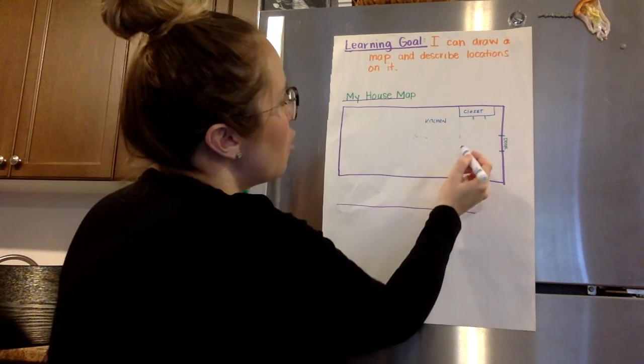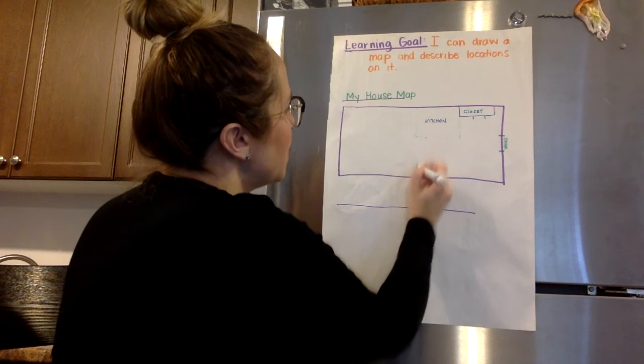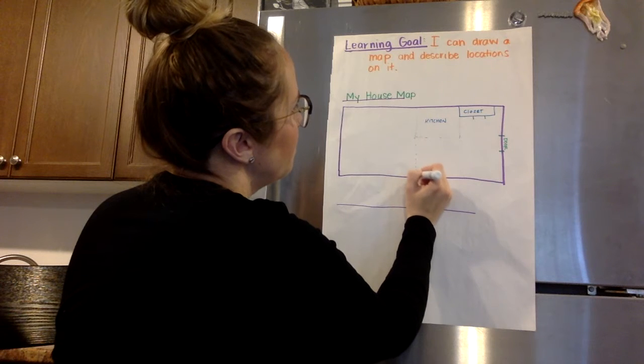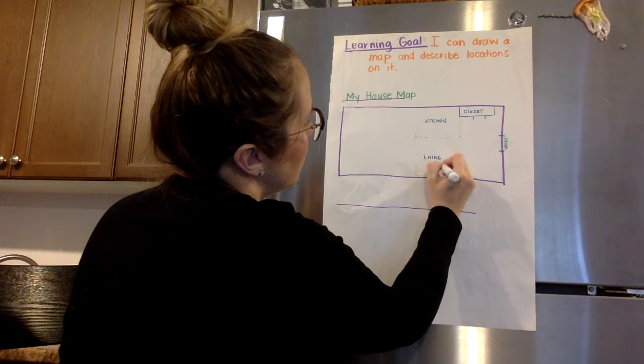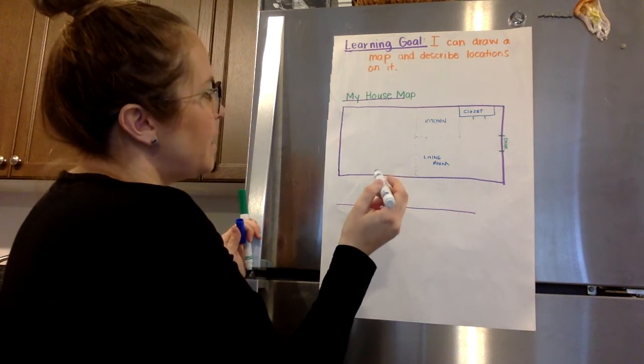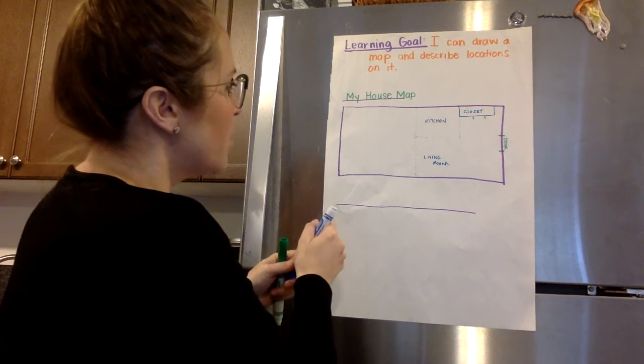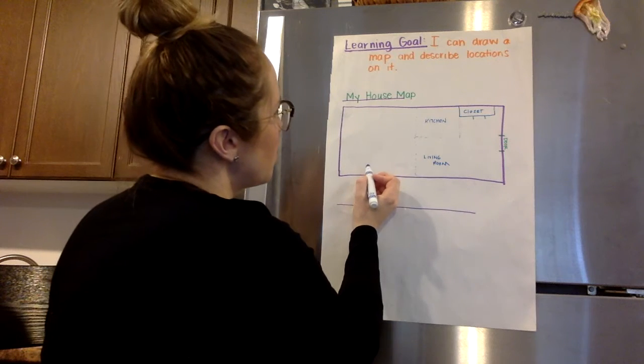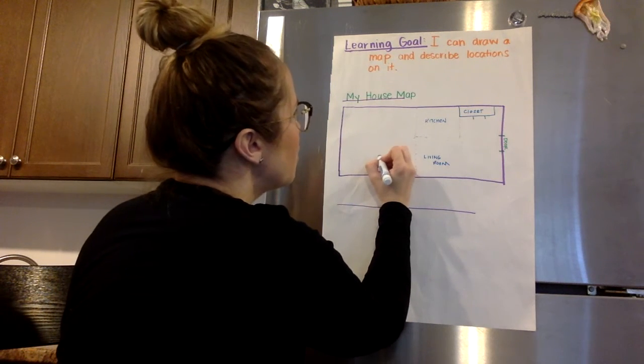And then over here, there's no walls, but over here, it's pretty much the living room. And then there is a hallway. So I think, so there's no doors right there, but then there is a door. If you keep on going past the living room, there's a door here.